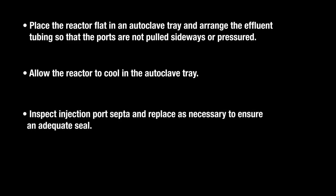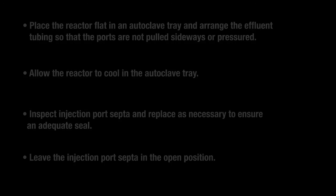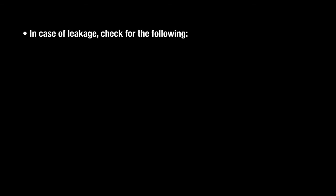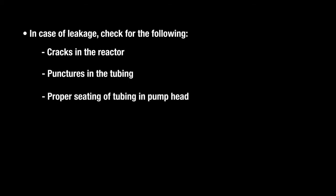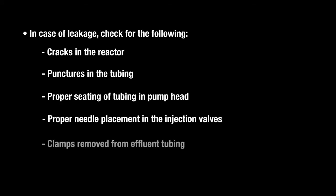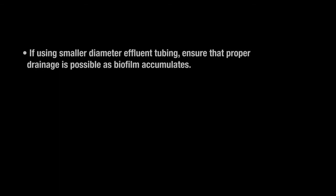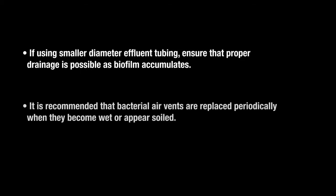Inspect injection port septa and replace as necessary to ensure an adequate seal. Leave the injection port septa in the open position. In case of leakage, check for the following: cracks in the reactor, punctures in the tubing, proper seating of tubing in pump head, proper needle placement in the injection valves, clamps removed from effluent tubing. If using smaller diameter effluent tubing, ensure that proper drainage is possible as biofilm accumulates. It is recommended that bacterial air vents are replaced periodically when they become wet or appear soiled.